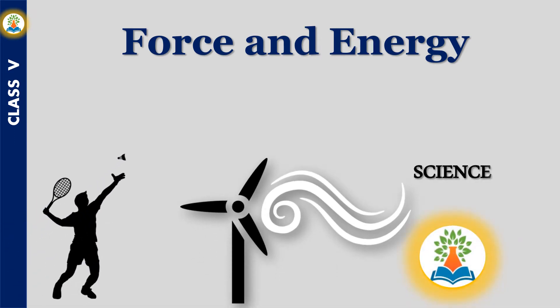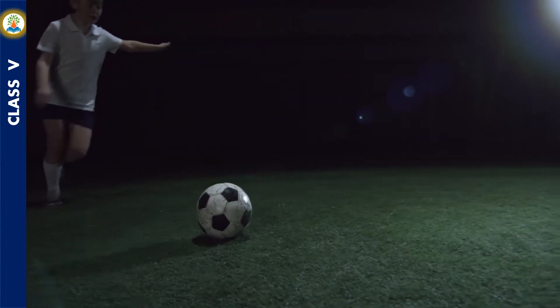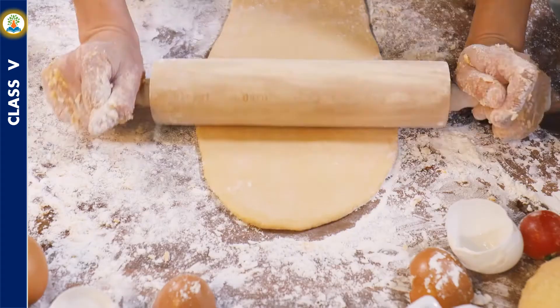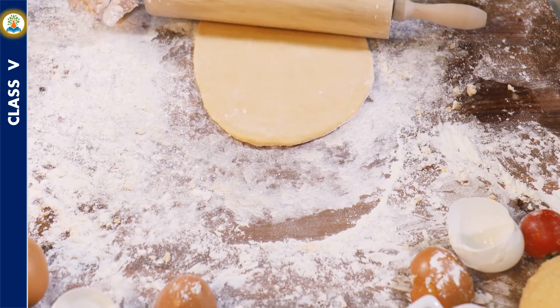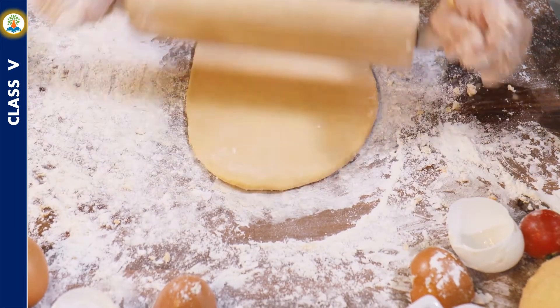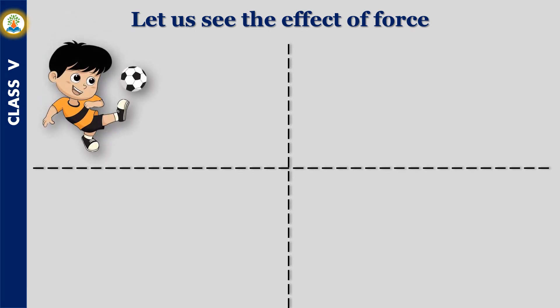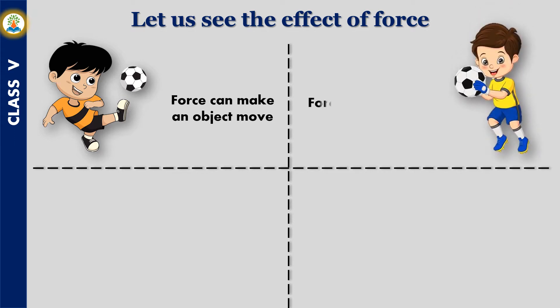Hello friends! In this video we will learn about force and energy. What happens when you kick a football? The ball moves. The shape of a ball of dough changes when you press it. Force can make an object move — a ball starts rolling when it is kicked. Force can also stop a moving object — a ball stops moving when you catch it.